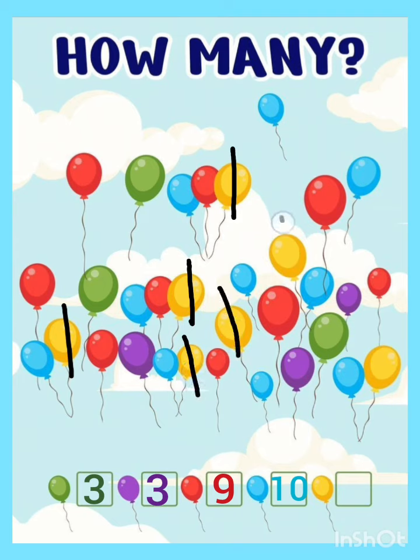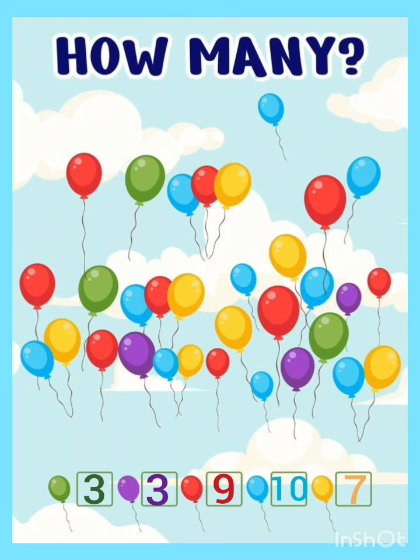6, 7. There are 7 yellow color balloons. So let's write 7 in the box. Like that you have to learn, count and write.